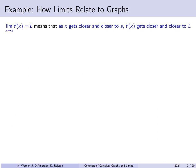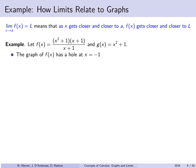One way to view this — not the technical definition but good enough to start — is: the limit as x approaches a of f of x equals l means that as x gets closer and closer to a, f of x is getting closer and closer to l. For example, let f of x equal x squared plus 1 times x plus 1 over x plus 1, and let g of x simply be x squared plus 1, which is f of x in reduced form. The graph of f of x has a hole at x equals minus 1, because x equals minus 1 is not in the domain, but the denominator cancels out with the factor x plus 1. For x not equal to minus 1, f of x is the same thing as g of x.